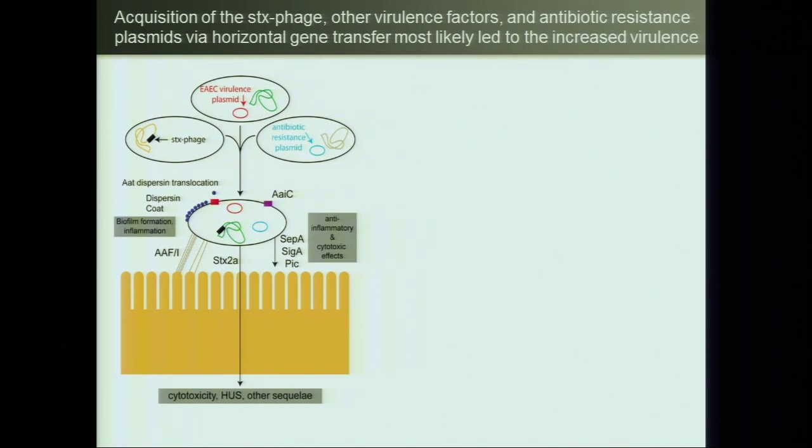We uncovered why it was becoming so virulent — from rapid horizontal transfer of virulence factors and antibiotic resistance factors from different bugs it was intermingling with. We also found that not only would this particular bug be resistant to antibiotic treatment, but certain antibiotics like Cipro would actually activate the toxin gene that makes you sick. The large bar in our paper shows the activation of the toxin gene in the presence of Cipro — so you don't want to treat with Cipro because not only will it be resistant, it's going to make you a lot sicker.